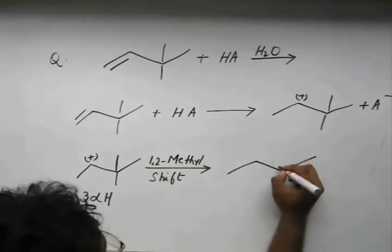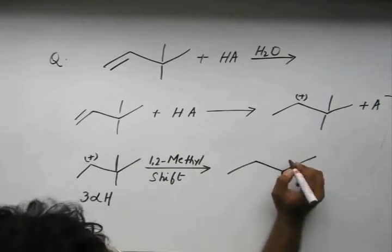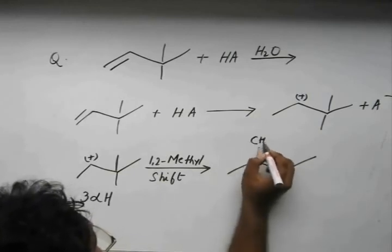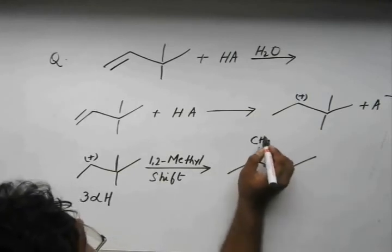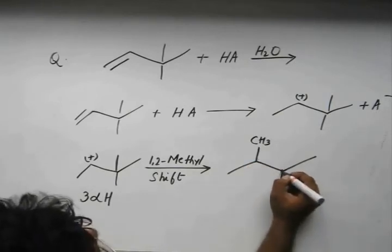The CH3 group, the methyl group from this place takes the bonded pair of electrons with itself, goes to this point, forms a bond like this.